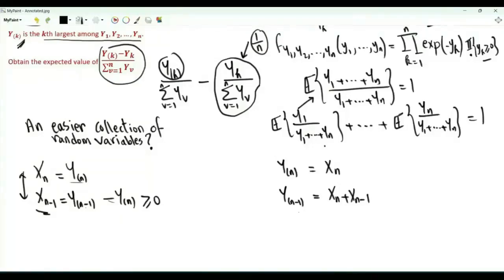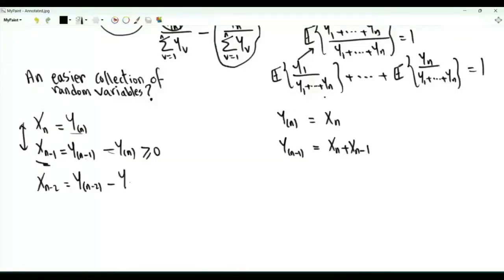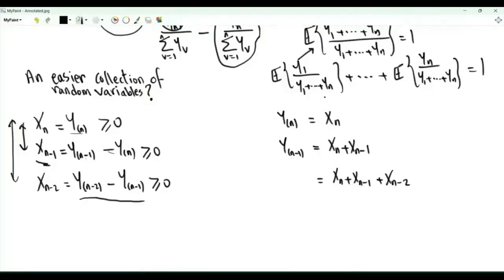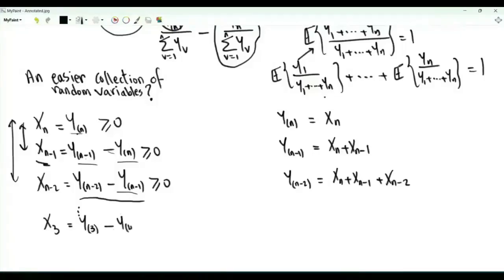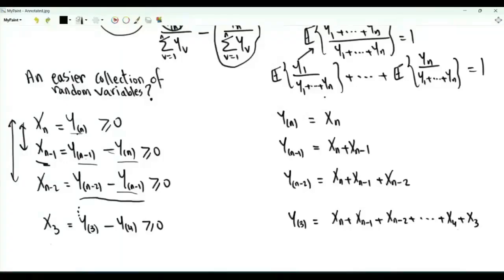Note that if we add, we get x1 plus xn minus one on one side, and y(n-1) in brackets on the other side. Then xn minus two is equal to y(n-2) in brackets minus y(n-1) in brackets, which is non-negative. The random variable xn is also non-negative because our random variables are exponential. If we add, we get xn plus xn minus one plus xn minus two. Adding the right-hand sides, the y(n) terms cancel, leaving y(n-2) in brackets. We continue: x3 is equal to y(3) in brackets minus y(4) in brackets. We see the pattern: y(3) in brackets equals xn plus xn minus one plus xn minus two, all the way to x4 plus x3.